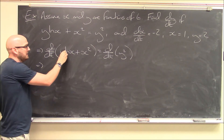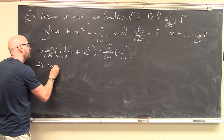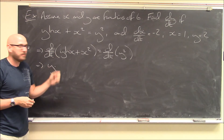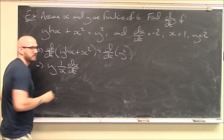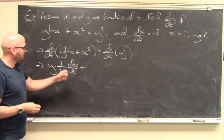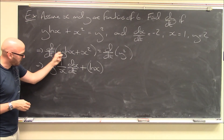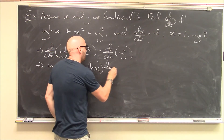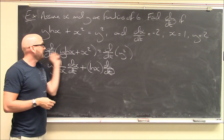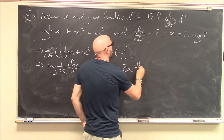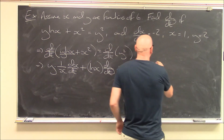Start applying these derivatives. On the left I've got a function of t times a function of t, so I need the product rule. The first function times the derivative of the second: y times the derivative of ln(x) with respect to t. I first differentiate with respect to x to get 1/x, then tack on dx/dt. Plus the second half of the product rule: ln(x) times the derivative of the first, which is dy/dt. Then plus the derivative of x² with respect to t: differentiate with respect to x to get 2x, times dx/dt.